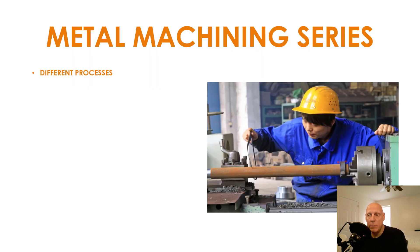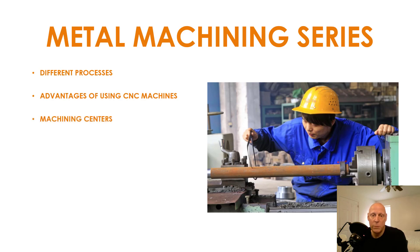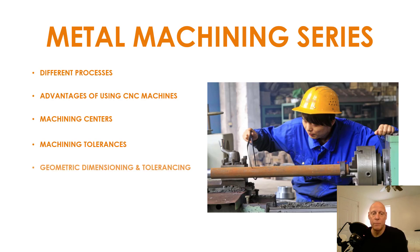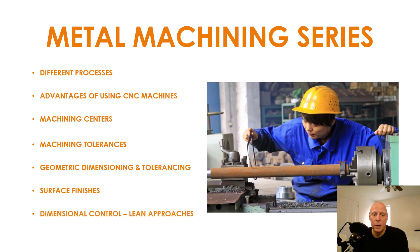We're going to be looking at the different machining processes, the advantages of using CNC machines, and machining centers. We're also going to be looking at machining tolerances, geometric dimensioning and tolerancing — or GD&T — surface finishes, and then finishing up on dimensional control taking a lean approach.